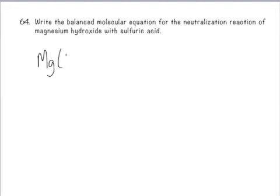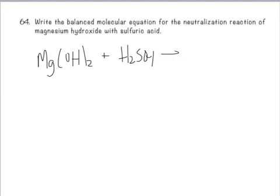And last but not least, we have magnesium hydroxide with sulfuric acid. So here is magnesium hydroxide, sulfuric acid is H2SO4. They are going to make magnesium sulfate, MgSO4 plus H2O. The only thing you have to do to balance this is put a 2 in front of the water.